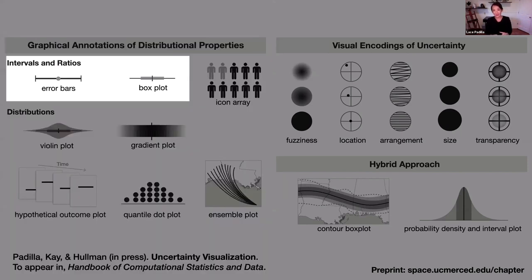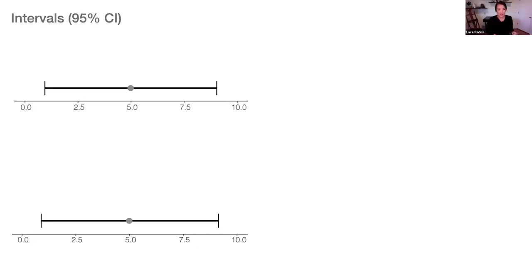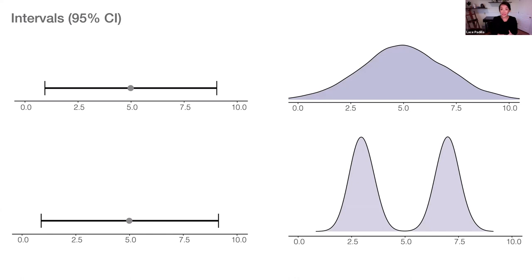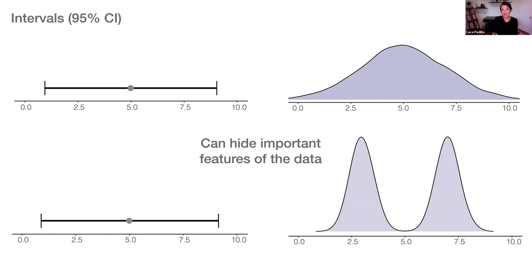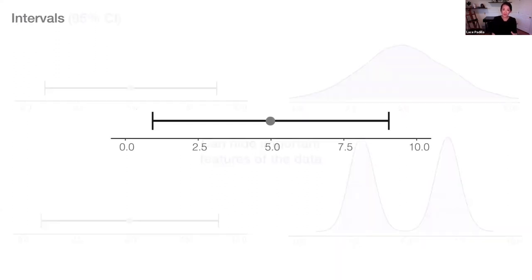Let's begin first with intervals and ratios. Here we have two intervals — these happen to be 95% confidence intervals. If you see these two visualizations, you might think they look pretty similar, maybe based on very similar or even the same data sets. Well, you would be wrong. They're based on very different data sets. The top one is a normal distribution; the bottom one is a bimodal distribution. When you see these intervals, they can hide important features in the data — they're averaging over space and just showing you end bars and a mean.